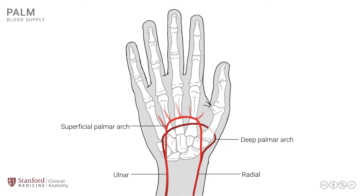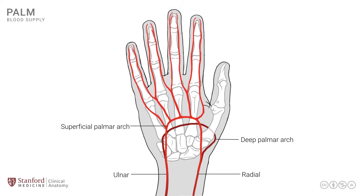The superficial palmar arch gives off several branches, typically somewhere between three to five, and these run down the hand and divide into digital arteries that run with the digital nerves on either side of the digits — one for the ulnar side and one for the medial side. Similarly, the deep palmar arch also gives rise to a number of smaller branches, but primarily the branches running to the thumb come from the deep arch. In this way, there is a very rich blood supply that can be altered based on environmental circumstances, such as exposure to cold or hot weather.